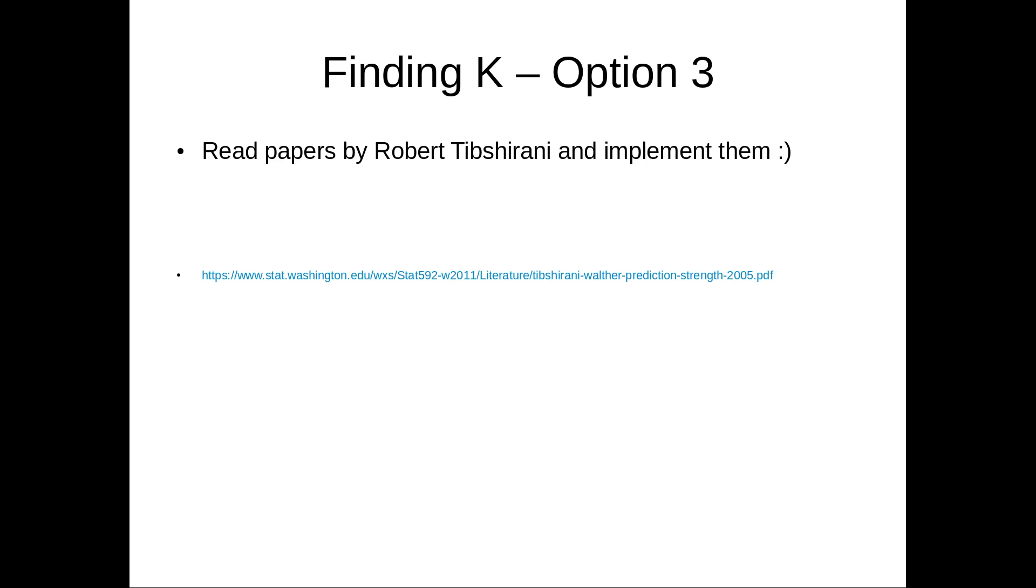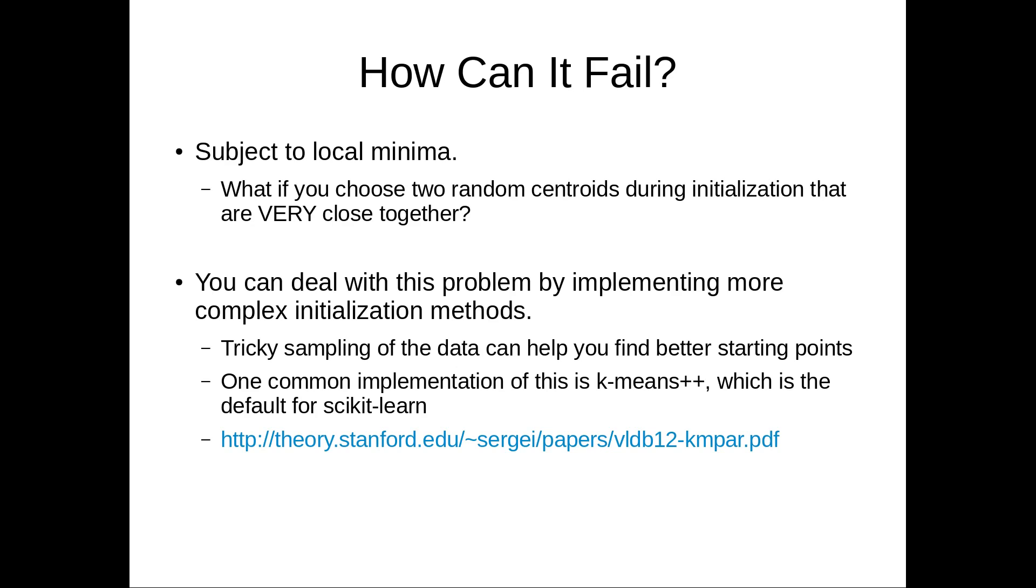How can k-means fail? K-means is very subject to this idea of local minima, which I think we've talked about in linear and logistic regression. This is slightly different, but imagine you were to choose two random centroids during initialization that were very close together. They just by random chance happen to be chosen very close together. What could happen is when you converge, you could have a couple of clusters that almost overlay each other and then a couple of clusters that are very weak and loose because the centroids never get pulled over to them. That would be an example of a local minima in k-means. One way that you could address that is just run k-means a bunch of times until you kind of converge and you get a result that's more or less the same over many runs.